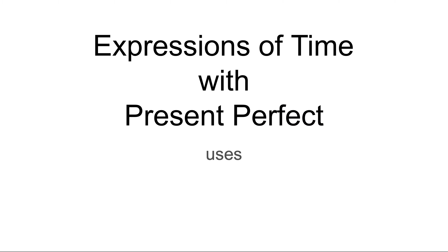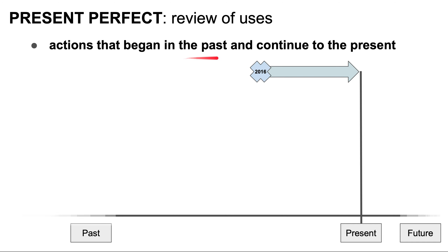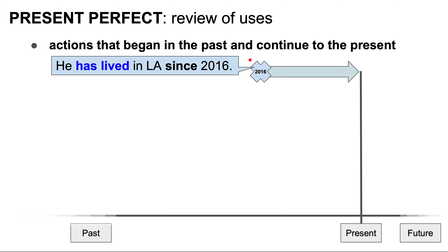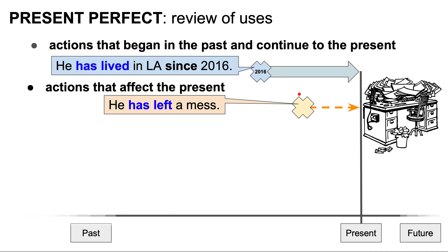Now let's review the uses of the present perfect. The present perfect is used for actions that began in the past and continue to the present. For example, he has lived in LA since 2016. We also use the present perfect for actions that affect the present. For example, he has left the mess — that is, he made a mess in the past, the mess is still here in the present, so we say he has left a mess.